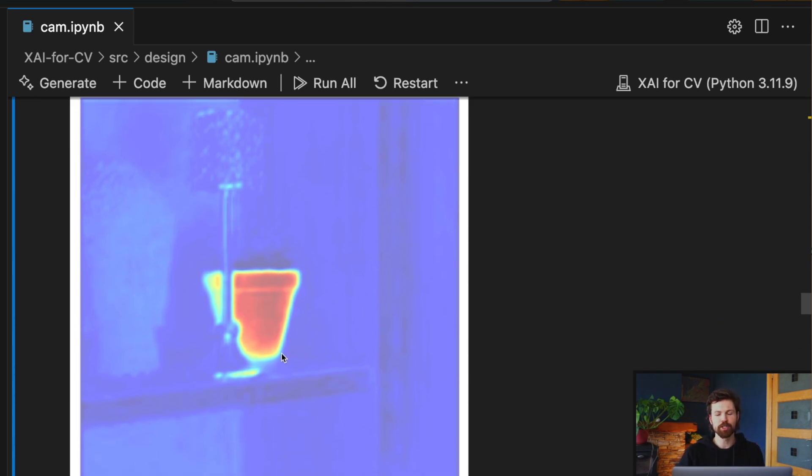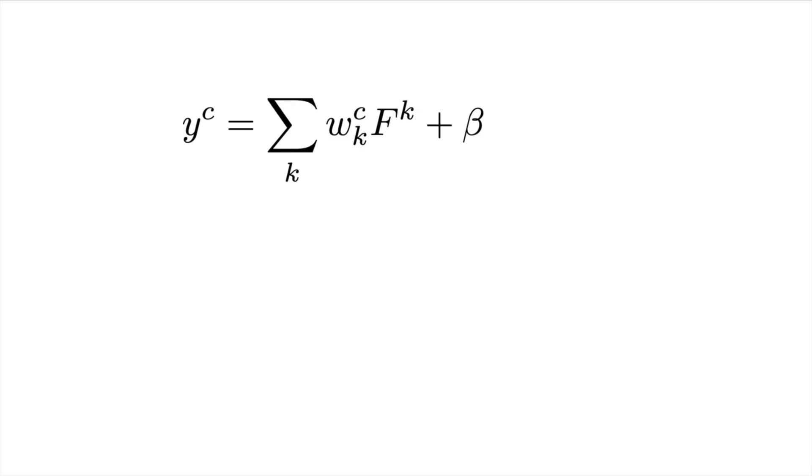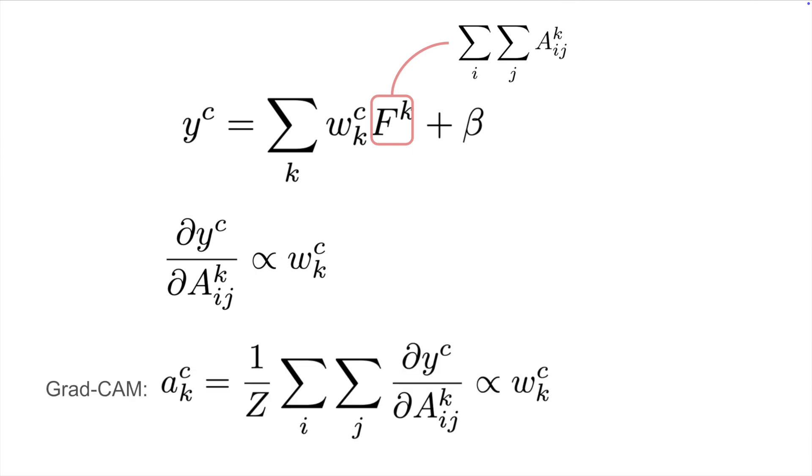So keep an eye out for that one. As we go, you will see that the method is very similar to another method called GradCAM, which we discussed in an earlier video. In fact, the two methods are mathematically related. So to end, we will discuss this relationship and use it to understand the trade-offs between interpretability by design and post-hoc methods.